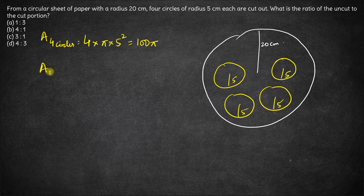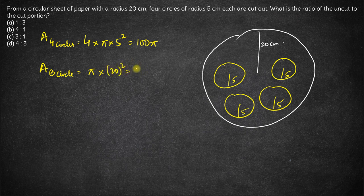What about the area of the bigger circle? The area of the bigger circle is π × r, which is 20 whole squared. This is 400π.